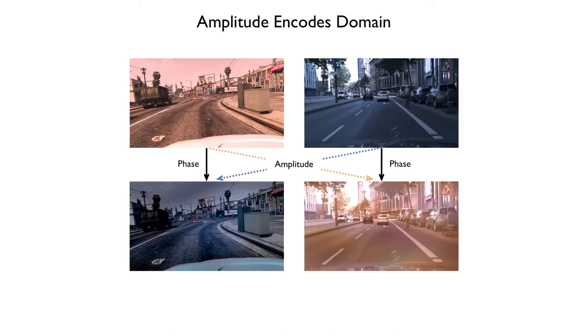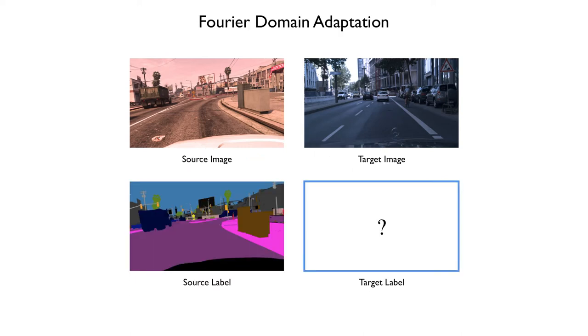On the other hand, the magnitude includes domain information and global appearance. Images obtained by swapping the amplitude now look like images across. We exploit these properties to perform unsupervised domain adaptation.